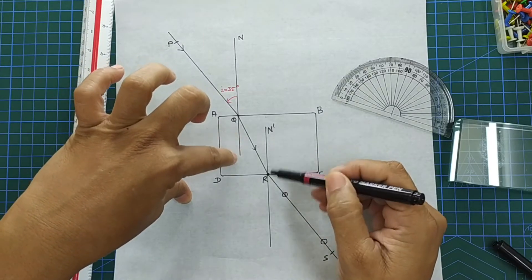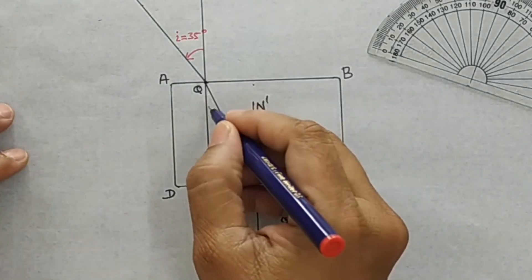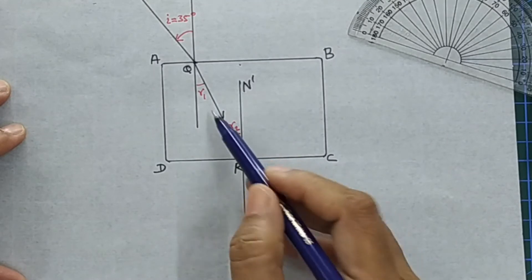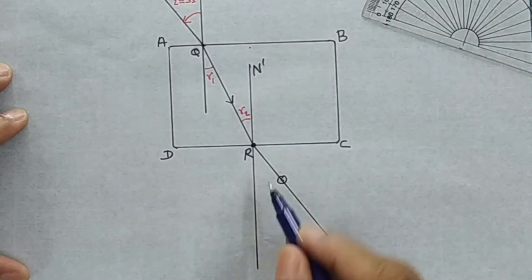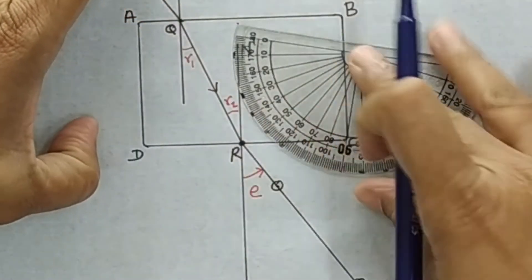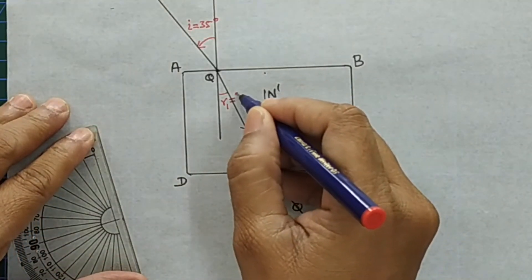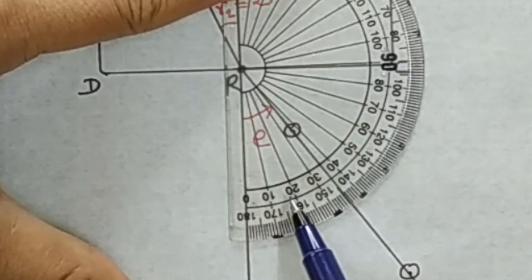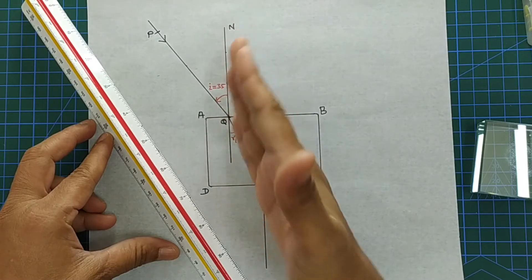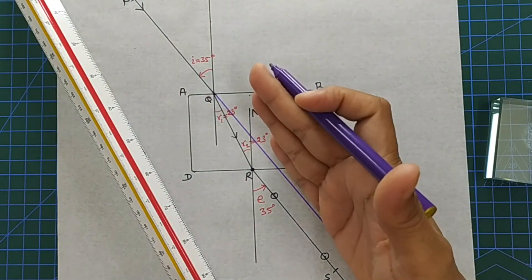The normals N and N' are parallel to each other. Since the refracted ray QR acts as a transversal, the first angle of refraction R1 and the second angle of refraction R2 should be equal as alternate interior angles. Measuring, R1 is 23 degrees and R2 is also 23 degrees. The angle of emergence is 35 degrees, equal to the angle of incidence. The ray of light deviates twice — once entering and once leaving the glass.